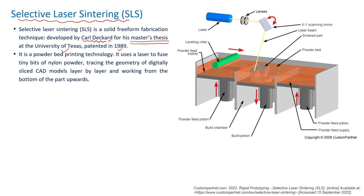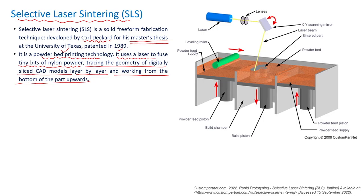SLS is a popular acronym for selective laser sintering. This process is a powder bed printing technology. As the name suggests, we use a powder bed to generate 3D parts by selective sintering of powder particles together using lasers. It uses a laser to fuse tiny bits of nylon powder, tracing the geometry of digitally sliced CAD part models layer by layer, working from the bottom of the part upwards.